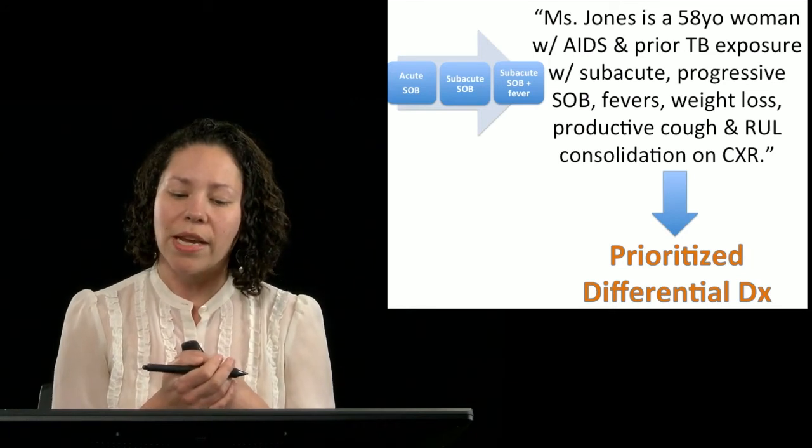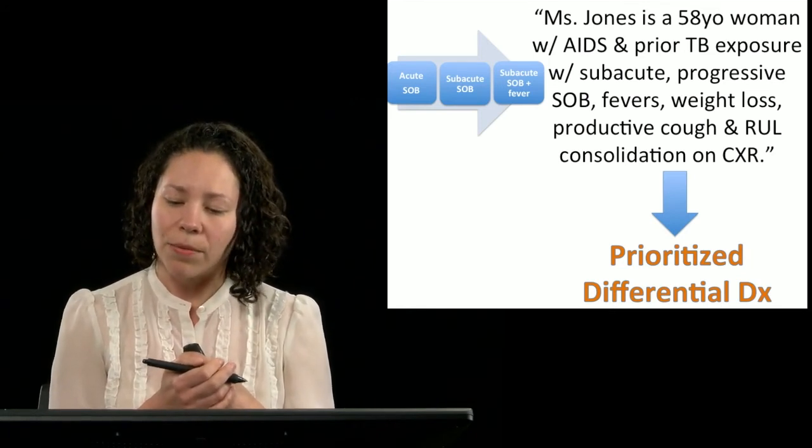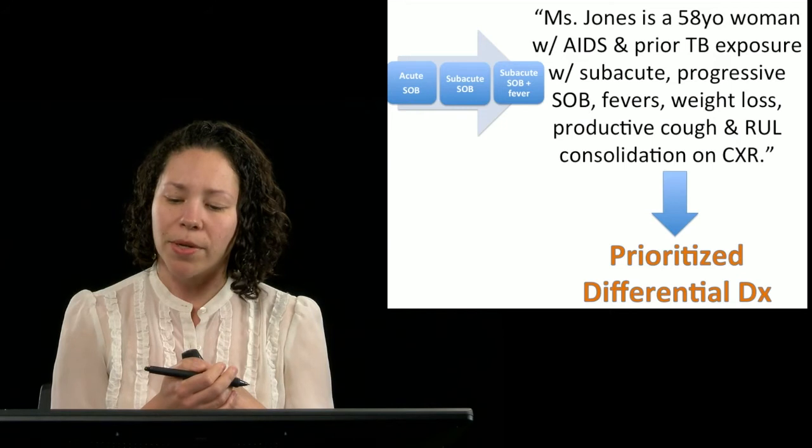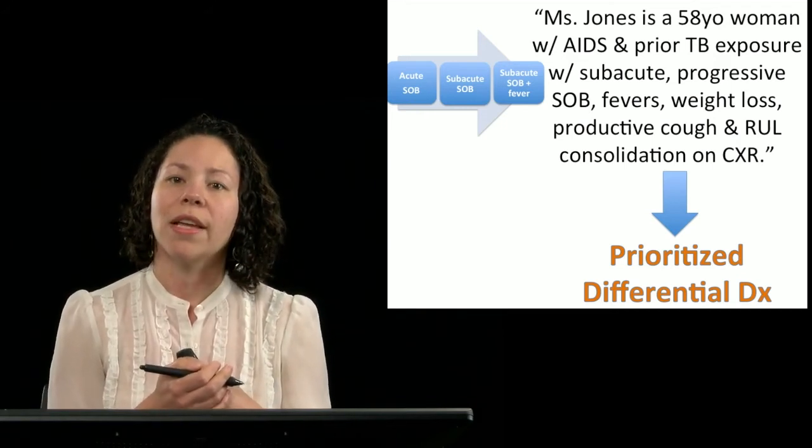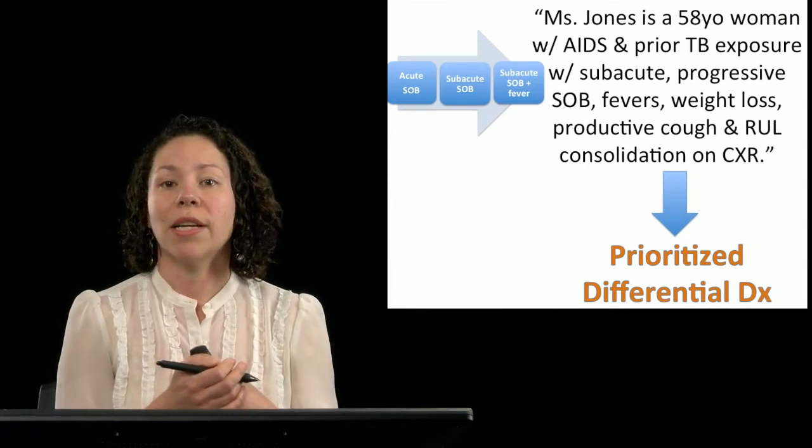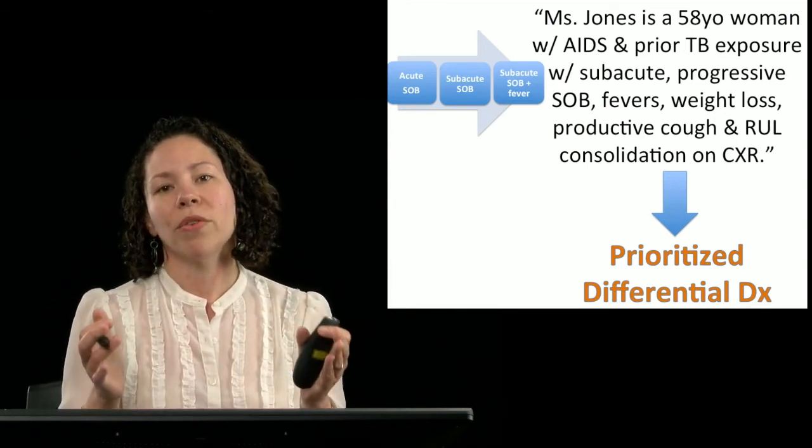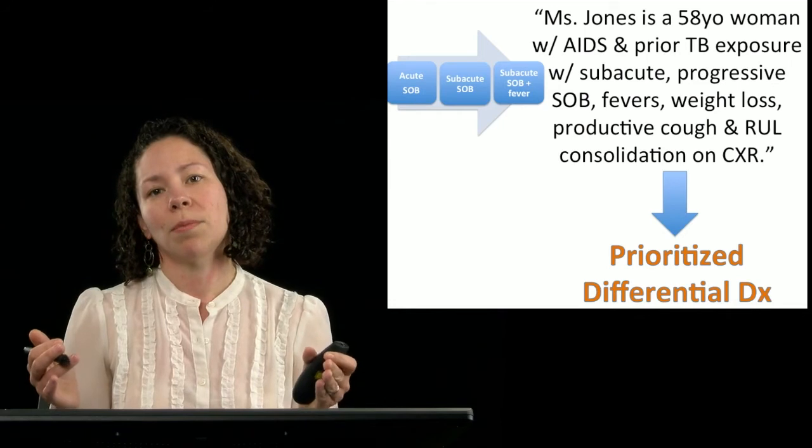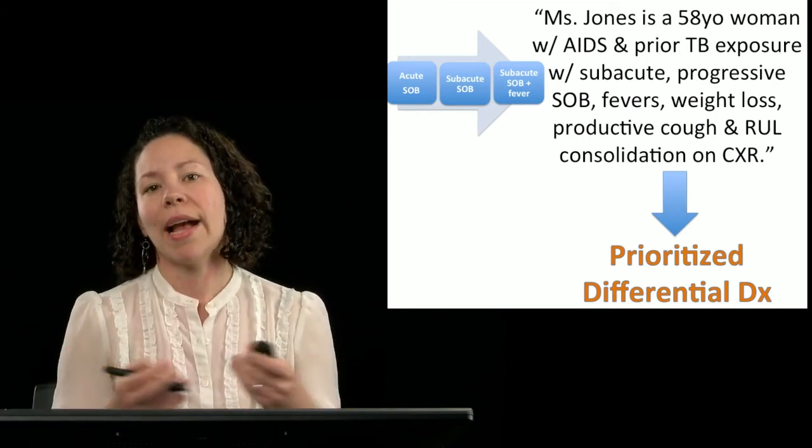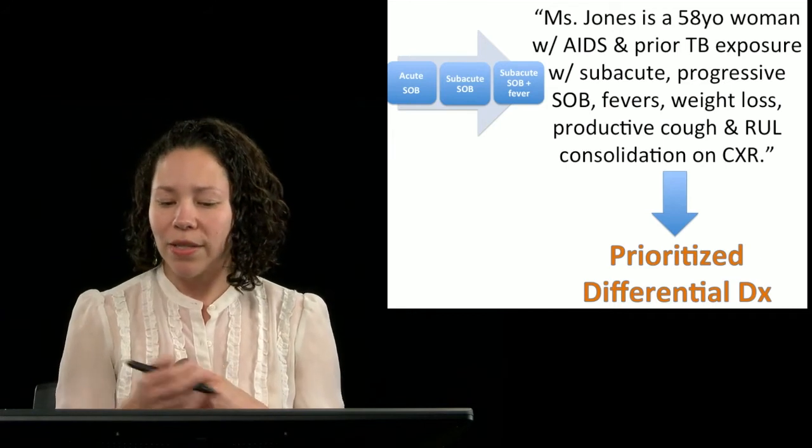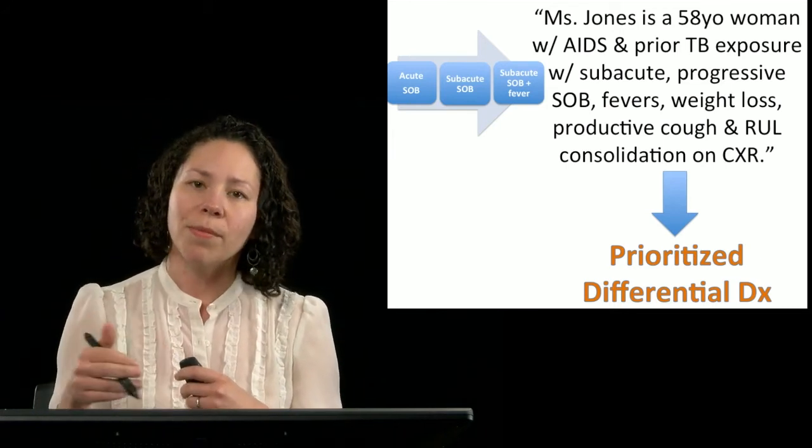Ms. Jones is a 58-year-old woman with AIDS and prior TB exposure, with subacute progressive shortness of breath, fevers, weight loss, productive cough, and upper lobe consolidation on chest x-ray. So we've really contextualized Ms. Jones's problem, and we've crystallized what we think is most important from the data gathering that we just did. And notice that in this one-liner or this summary statement, we have a lot of key elements that we've discussed.